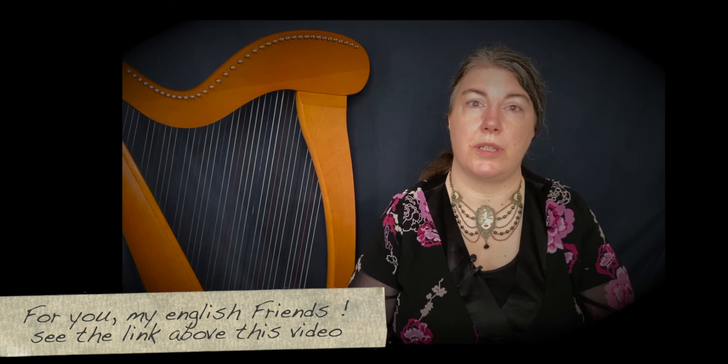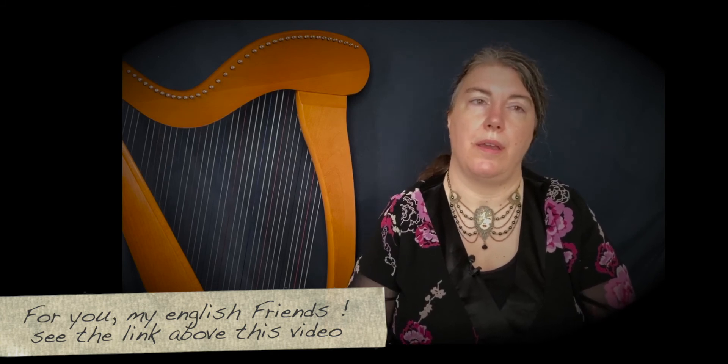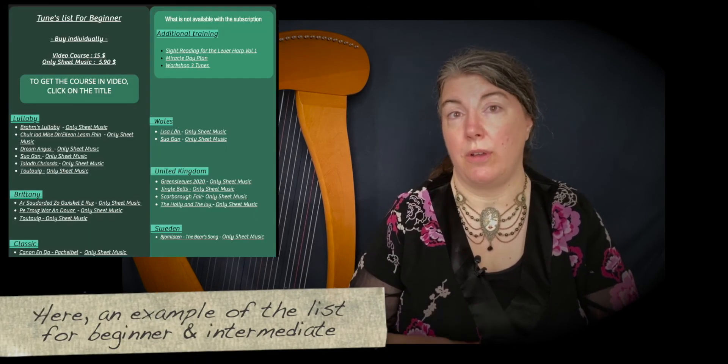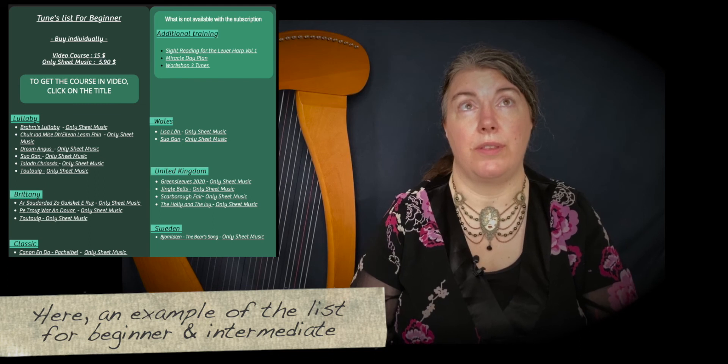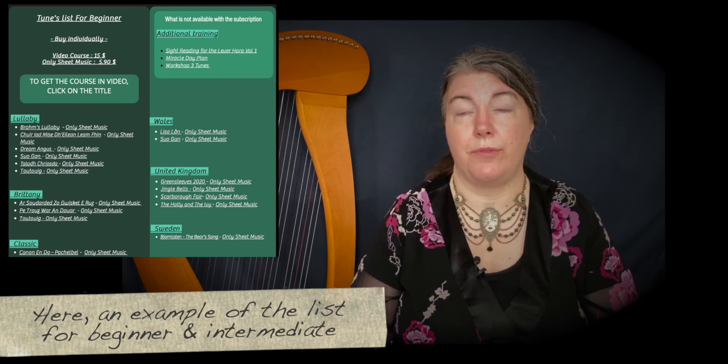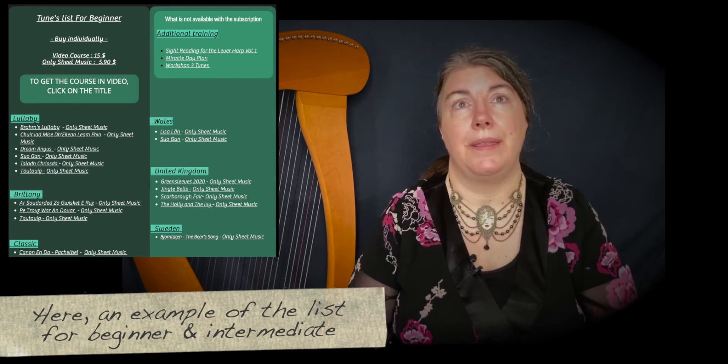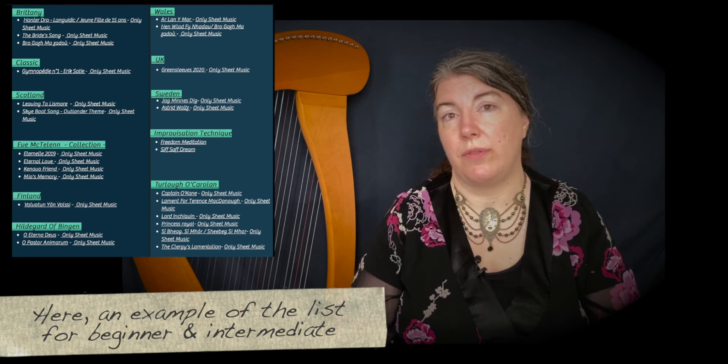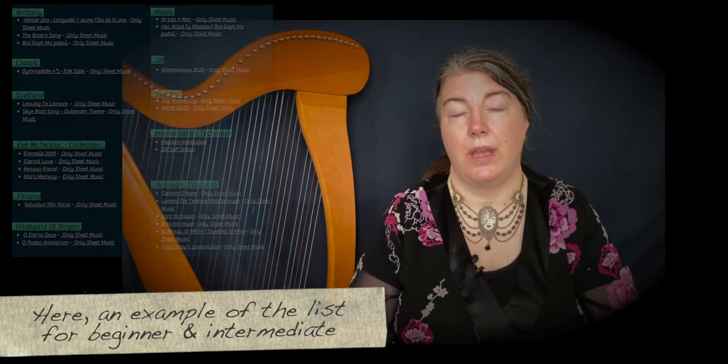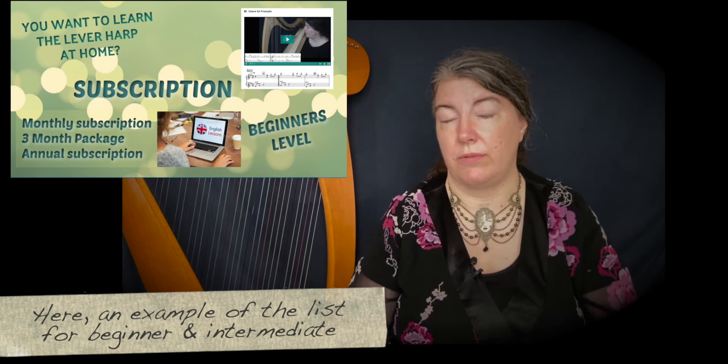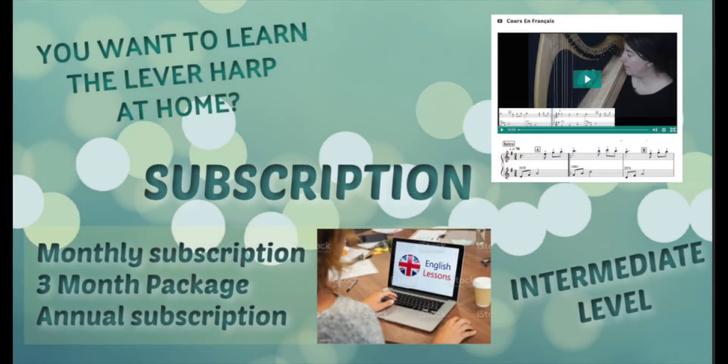I put this summary on my French website, but you have a very special page for English people where you can see the title of the full complete catalogue that I made before. You can choose different ways. You can see the subscription. The subscription is actually in two levels: beginner and intermediate. You can see the price and the conditions.